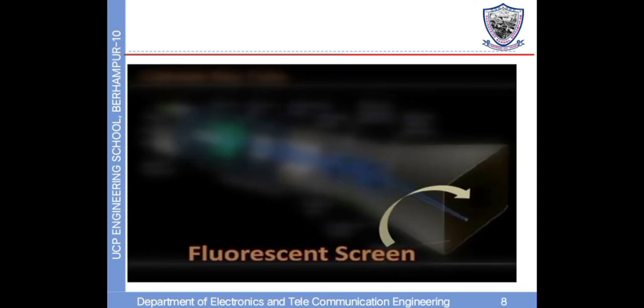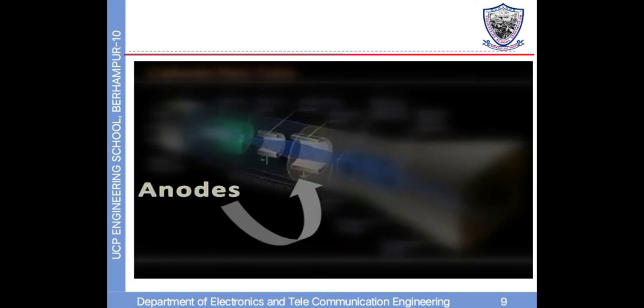Fluorescent screen. Cathode ray tubes translate an electrical signal into a visual image. The fluorescent screen is made with phosphorous, which generates light when the electron beam strikes upon it. Anodes convert the energy of incident electrons into X-rays, dissipating heat as a byproduct. Most X-ray tube anodes are made of tungsten. Tungsten has a high atomic number of 74 and a high melting point of 3370 degrees centigrade with a correspondingly low rate of evaporation, thus it is used in CRT.